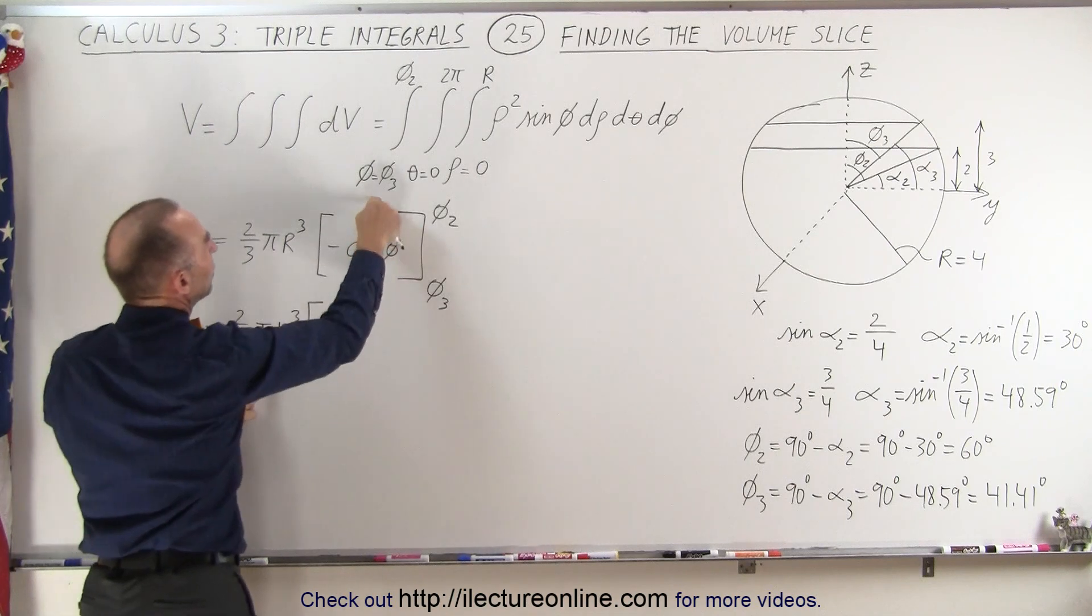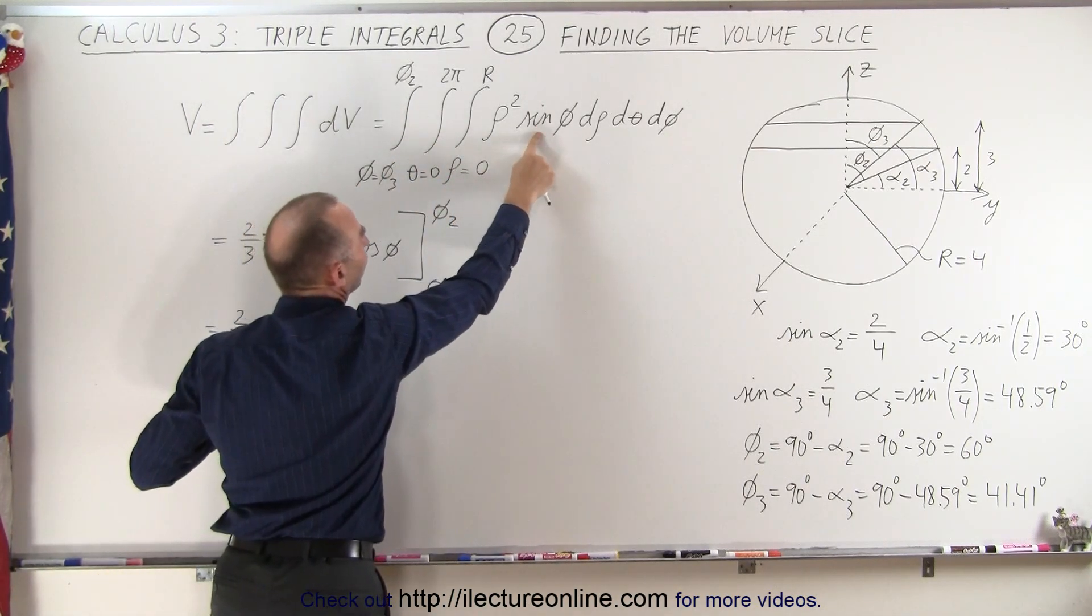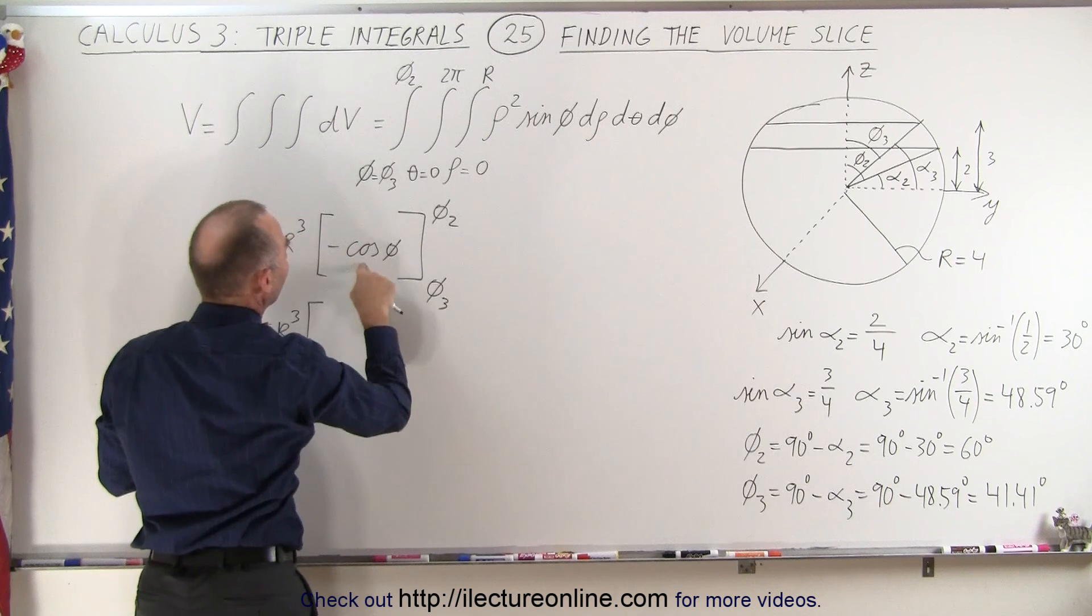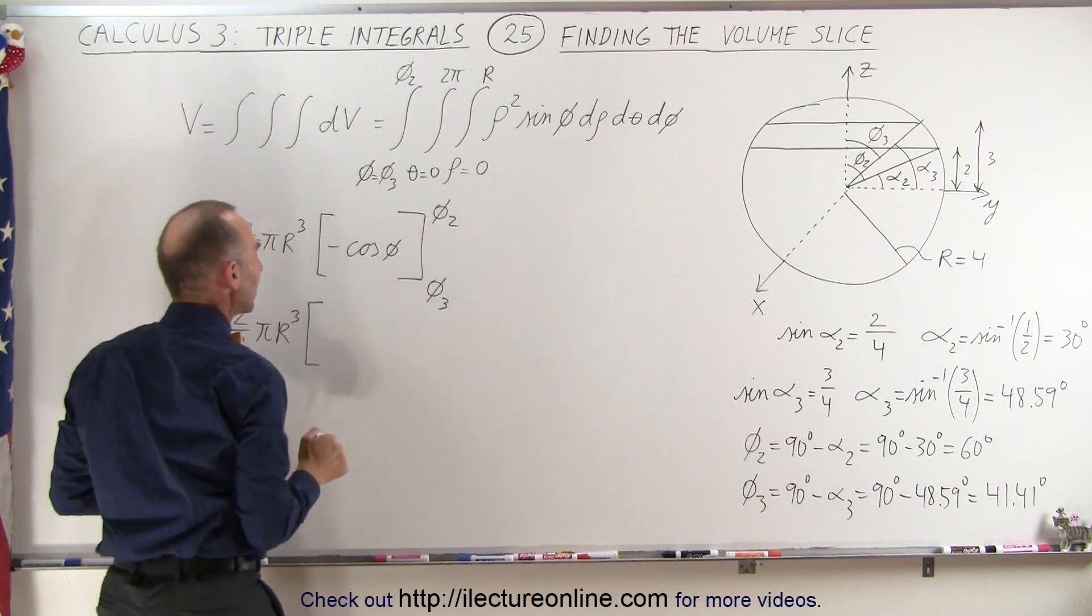And then finally when we integrate over this last one we take the integral of the sine of phi dφ which gives us minus the cosine of phi evaluated between the two angles.